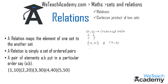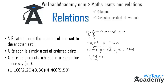Here we have two ordered pairs which show the equality relation. The example is: (x+y, 1) = (3, x−y), and we have to find the values for x and y. Since both ordered pairs are equal, we equate x+y = 3 and 1 = x−y. Now let us add both equations.